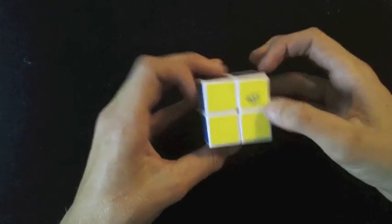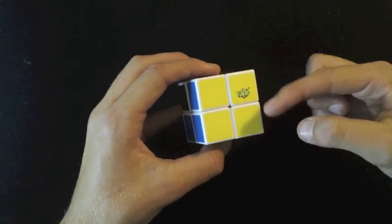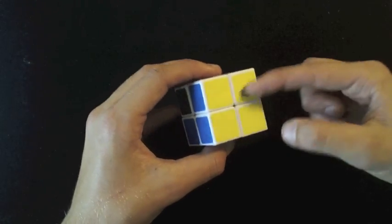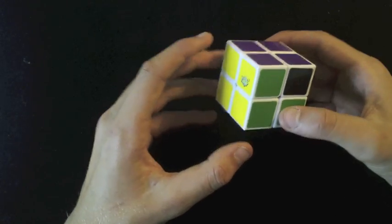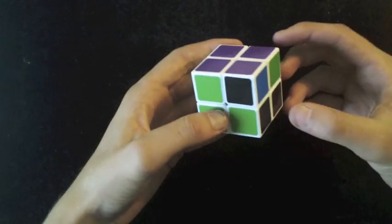How you set it up is, you get your 2x1 block and put it with the color that is the same, so this is yellow, so I match up with the yellow, and then I want you to put it on the right hand side.